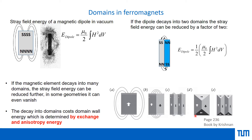Ideally, the system wants to split into infinite domains, but this cannot happen. While splitting satisfies the stray field and dipole energy requirements, each domain wall costs exchange energy. Exchange energy wants spins aligned parallel, so it is not happy when spins change orientation across a wall. Splitting into infinite domains would make exchange energy very large. The number of domains is therefore a compromise between exchange energy and anisotropy energy, with the system preferring a state where both are minimized.